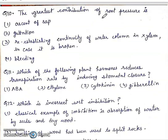Question 10: The greatest contribution of root pressure is: First, ascent of sap. Second, guttation. Third, re-establish continuity of water column in xylem in case it is broken. Fourth, bleeding. Right answer will be third, re-establishing the continuity of water column in xylem in case it is broken.